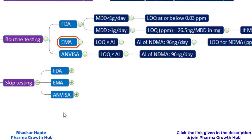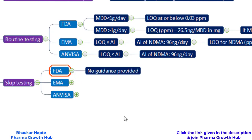Now let us talk about skip testing. Looking at the three regulators — FDA, EMA, and NVSA — FDA has not provided any guidance for skip testing, meaning you cannot employ skip testing for FDA; you must test all batches for nitrosamine content. However, EMA has provided guidance on when skip testing is possible. EMA states that if the content of nitrosamine is less than or equal to 30% of its acceptable intake, skip testing approval can be obtained.